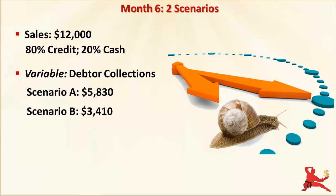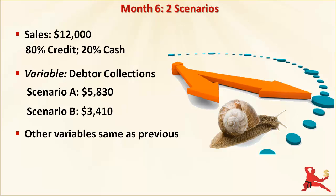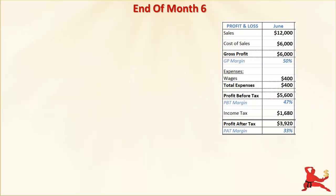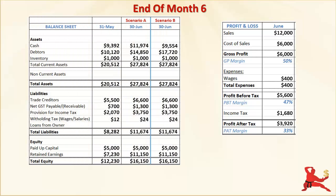These debtor balances include goods and services tax, the equivalent of value added tax. All other variables like inventory holdings, supplier terms, wages and tax rates are the same as we've used in past examples. The profit and loss for the two scenarios are identical. The impact of the speed of debtor collections shows up in the balance sheet. Look at the balance sheet for the two scenarios. The difference is in the mix of cash and debtor balances. Debtor collections in Scenario A are higher than in Scenario B, so cash balances are higher in A and debtors are higher in B.